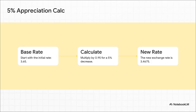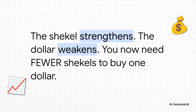As you'd expect, the calculation is just the reverse of what we did before. A 5% appreciation means we multiply by 0.95. Our new exchange rate is now down to about 3.47. And again, notice the pattern: for the currency to get stronger, the exchange rate number actually goes down.